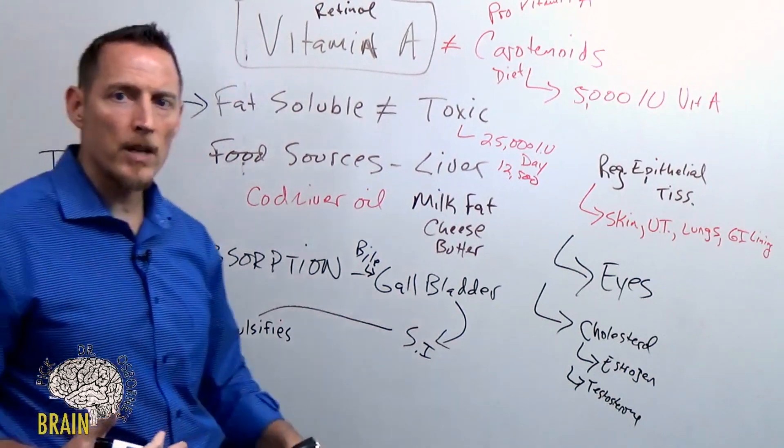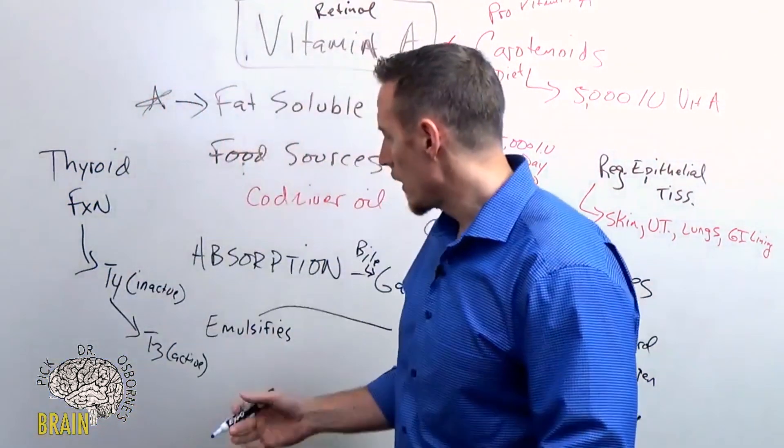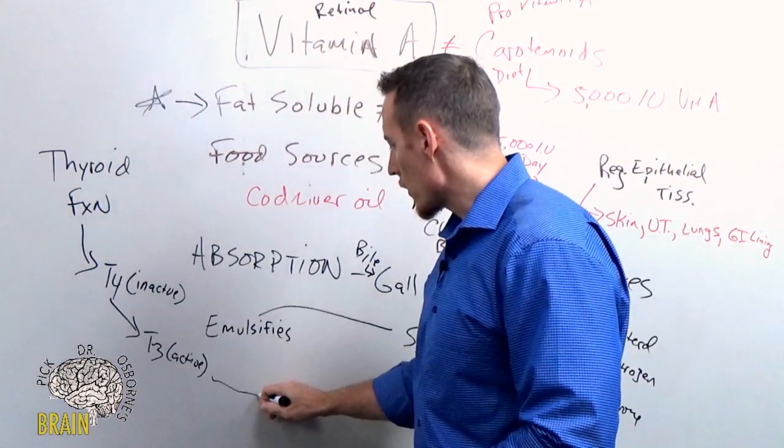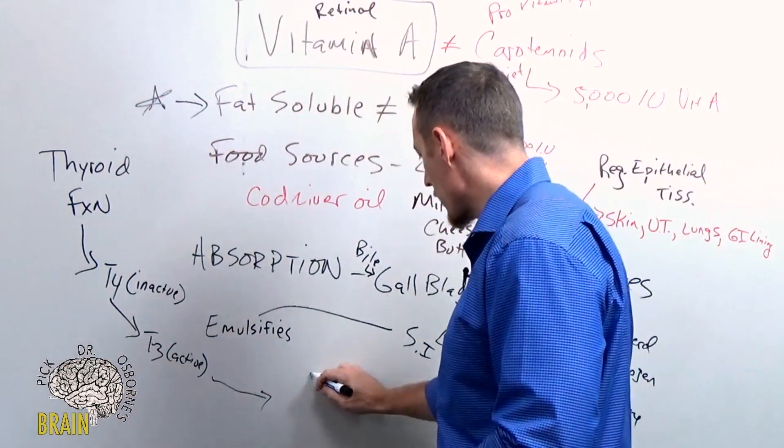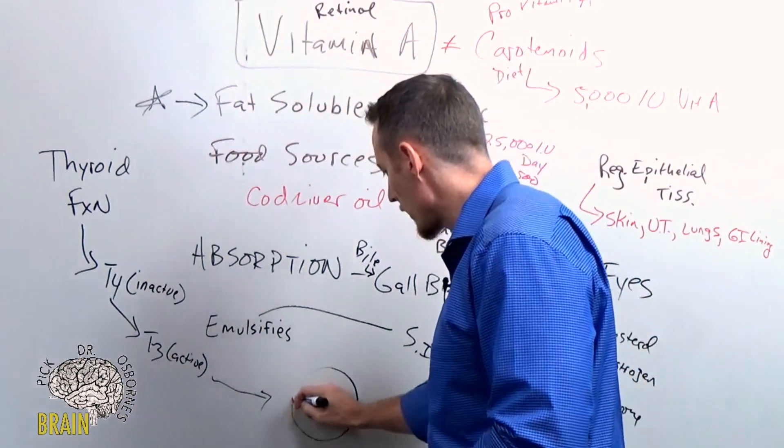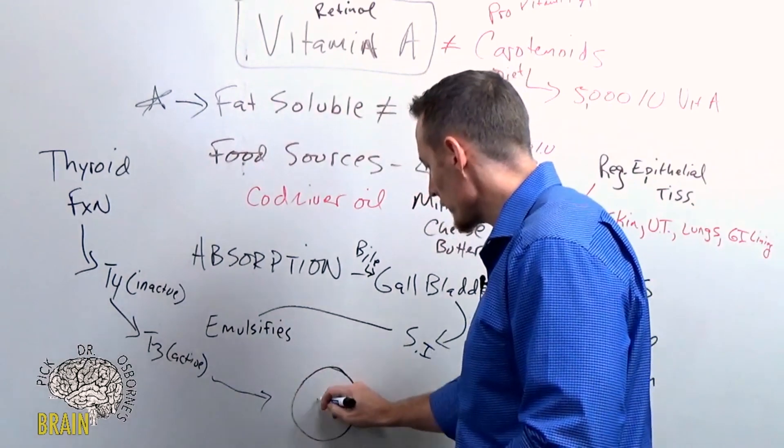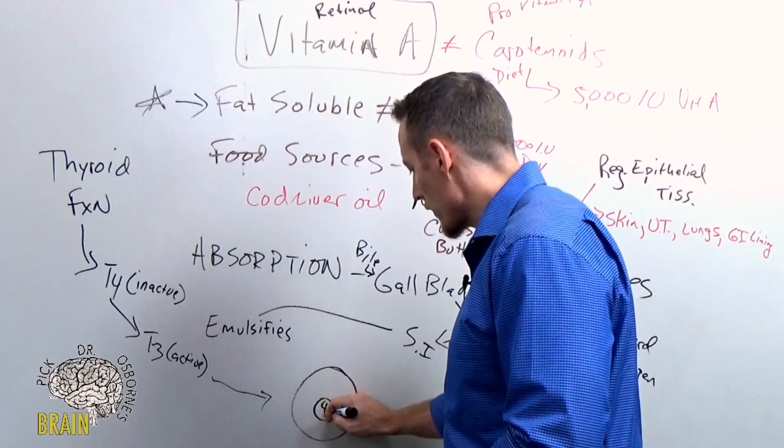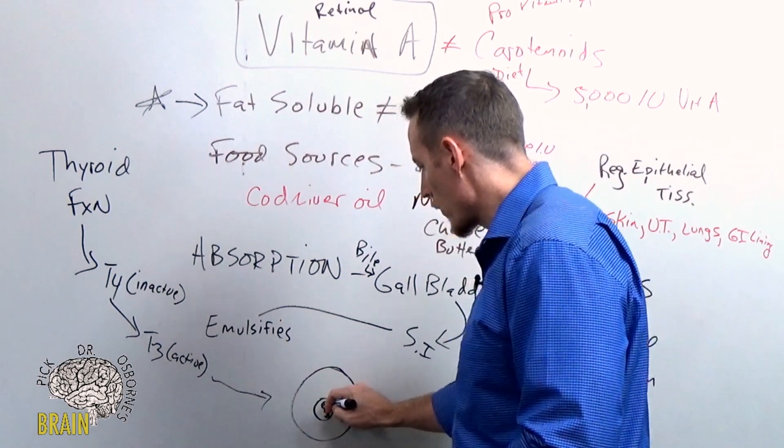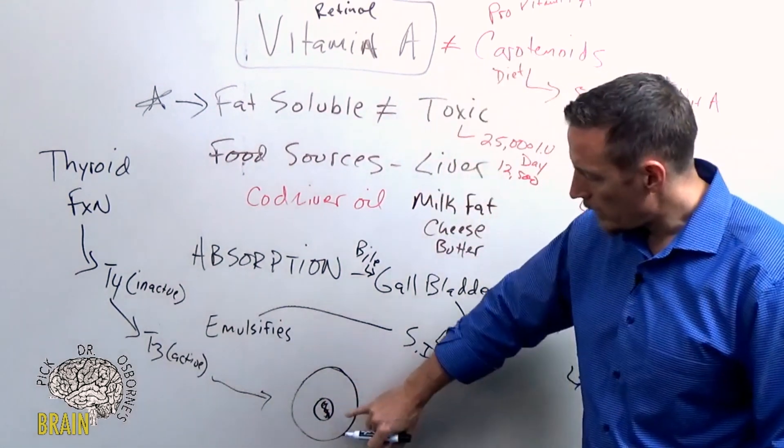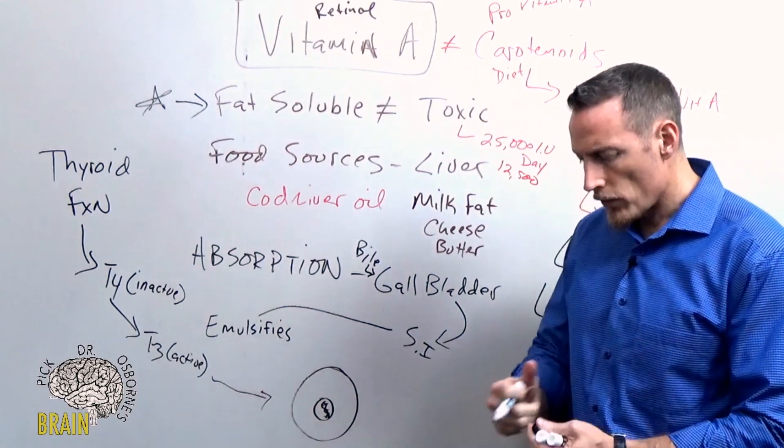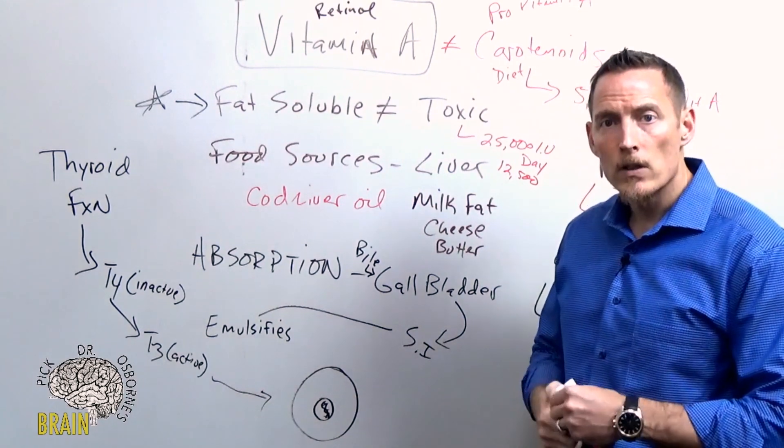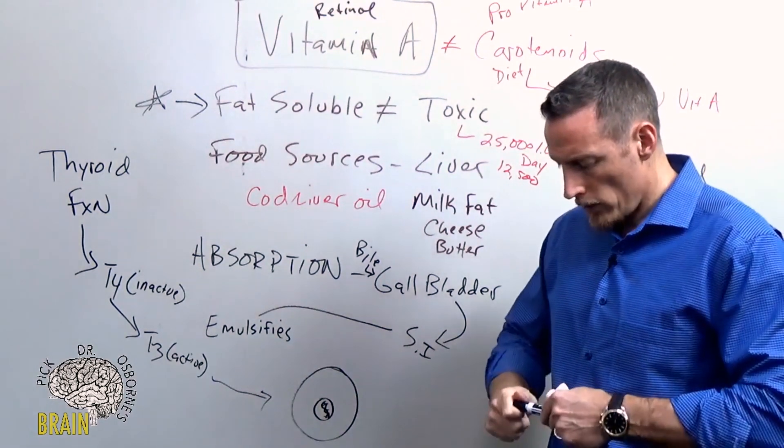But before T3 can do its job, T3 has to stimulate a receptor on the surface of your DNA. If we look at a cell, this is just my rudimentary drawing of a cell. At the core is the cell nucleus, and then you have the DNA. On the surface of the nucleus of the cell, the ring around the nucleus, it's called a nuclear membrane.